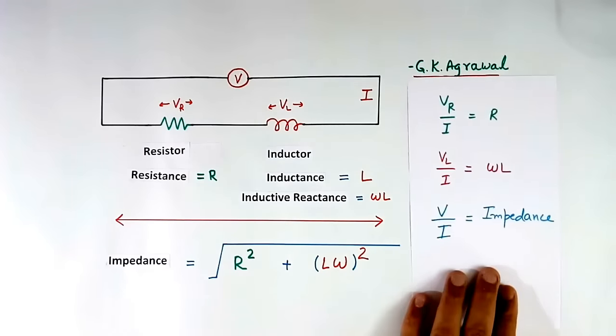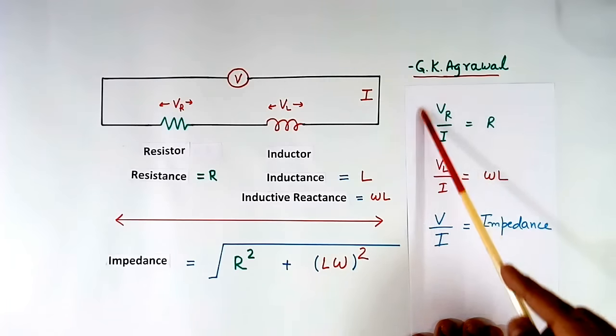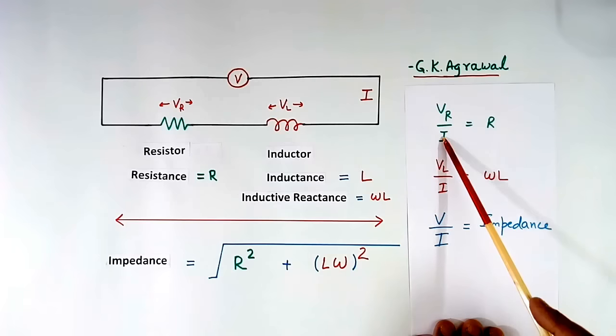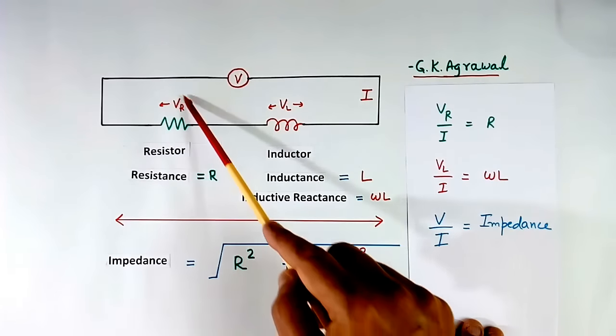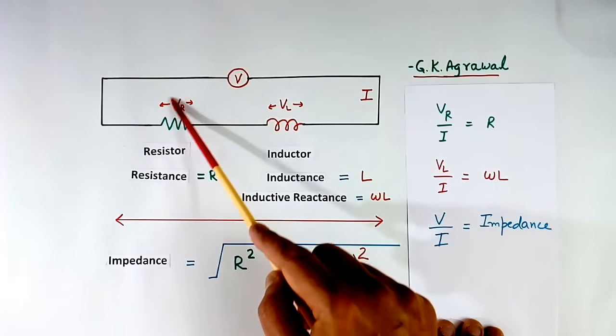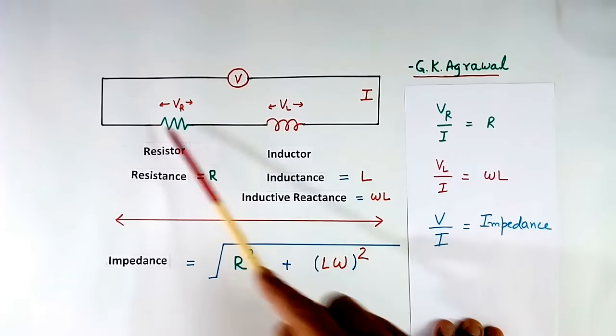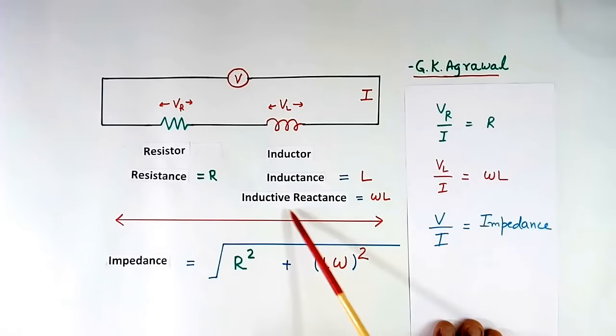To calculate resistance using Ohm's law, we divide VR by I — the voltage across the resistor divided by the current — which equals resistance. Similarly, to get inductive reactance, we take VL divided by I, which equals ωL reactance. To calculate impedance, we take the full voltage V divided by I, which equals impedance.